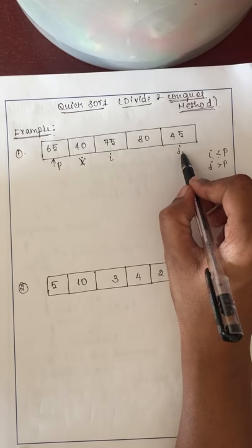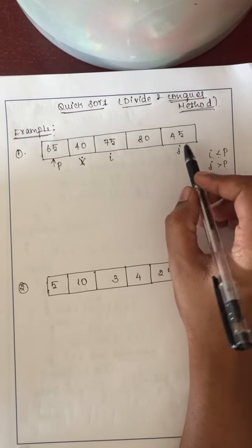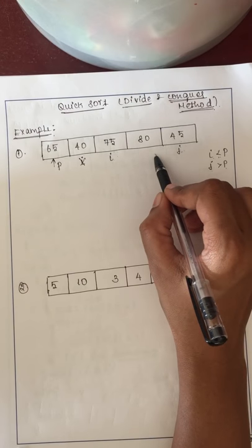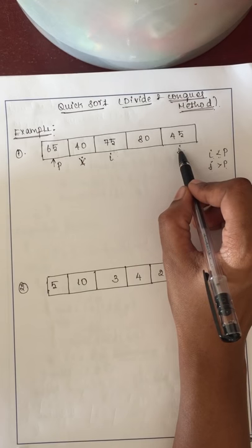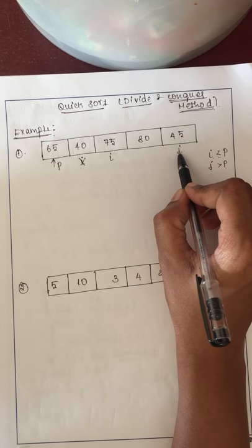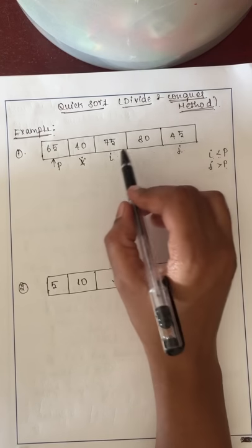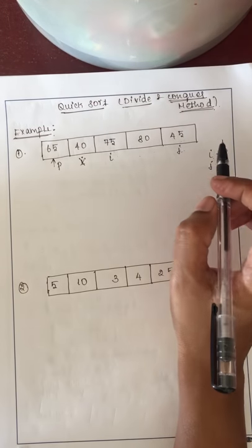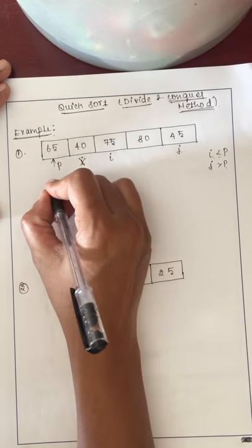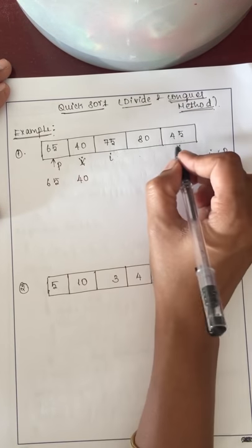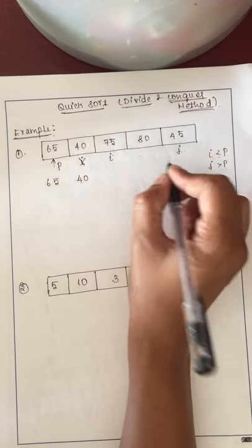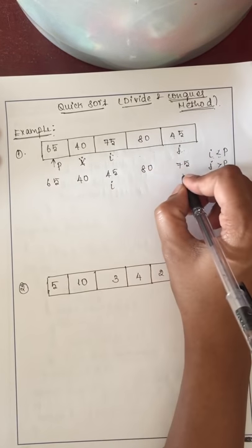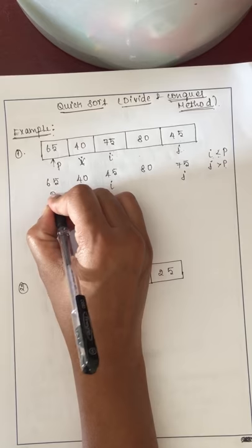j must always be greater than the pivot element, but here j is lesser than pivot, so we cannot decrement j. Since we cannot increment i and cannot decrement j, we exchange the positions of i and j. After the swap, j (45) comes to the i position and i (75, 80) goes to the j position, with 65 remaining as the pivot.